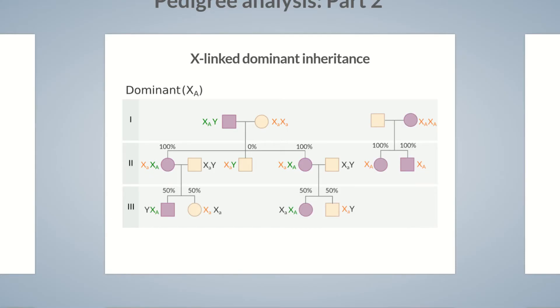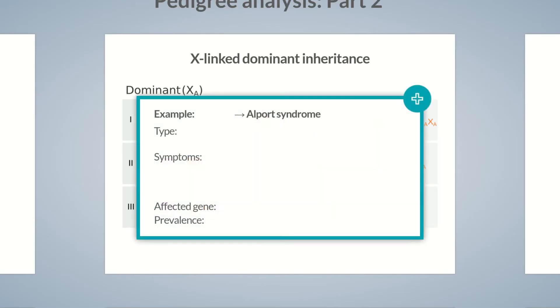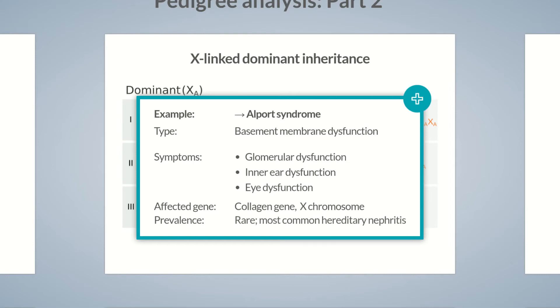There are very few X-linked dominant disorders. One of these is Alport syndrome. In approximately 80% of cases, it's caused by a mutation in the collagen gene on the X-chromosome. Since collagen is a component of the basement membrane, this mutation mainly leads to dysfunctions of the glomerulus, the inner ear, and the eye. Although the condition is quite rare, it's the most common cause of hereditary nephritis.